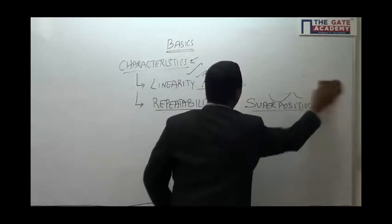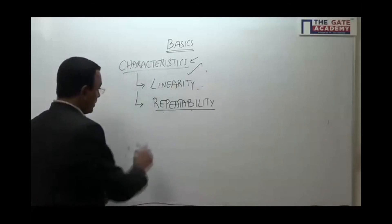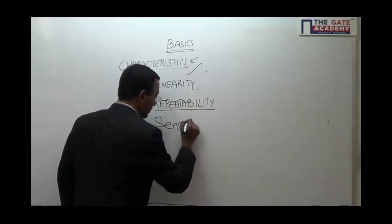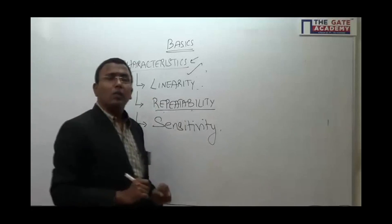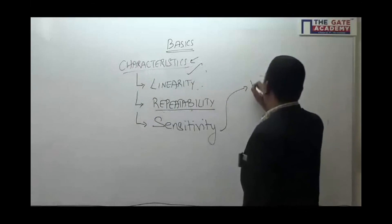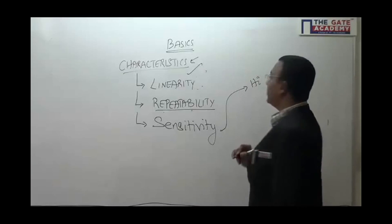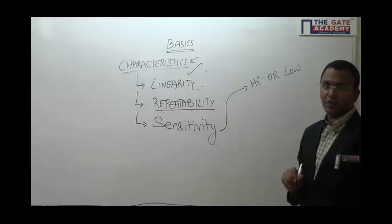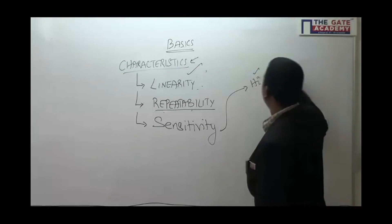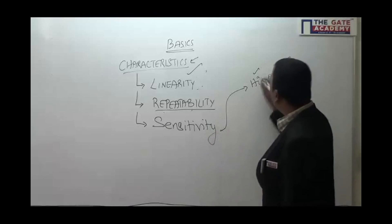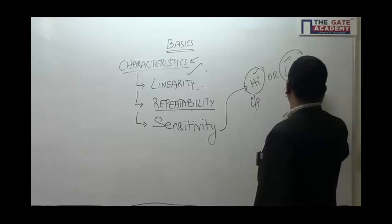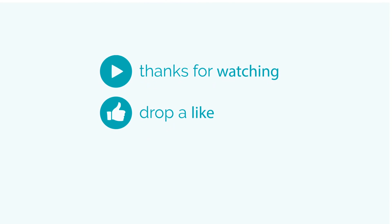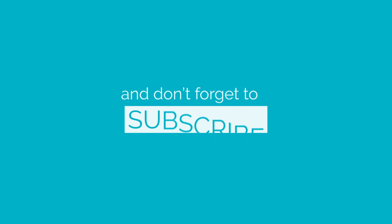The next is a very interesting property called sensitivity. Whether sensitivity should be high or low — it should be both. The system should be highly sensitive to the input, and should have low sensitivity to disturbances.